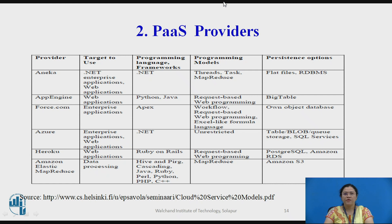The second group is PaaS providers, which includes Aneka, App Engine, Force.com, Azure, Heroku, and Amazon Elastic MapReduce. According to these providers, the supported programming languages and frameworks include .NET, Python, Java, Apex, Ruby on Rails, etc. Programming models required include threads, tasks, MapReduce, request-based web programming, workflow, and Excel-like formula language. Persistence options include flat files, RDBMS, BigTable, etc.